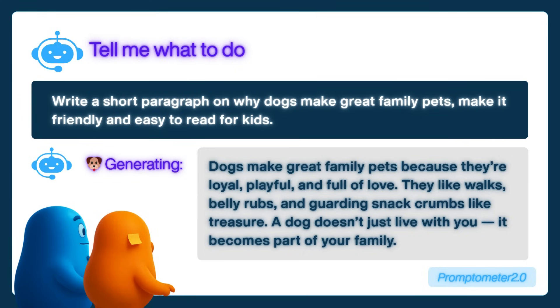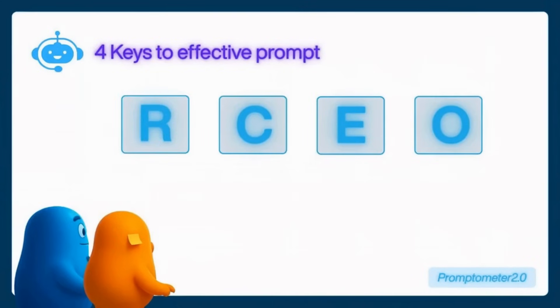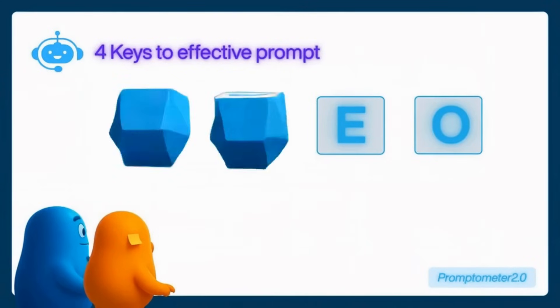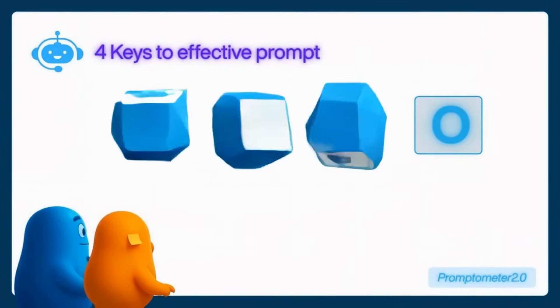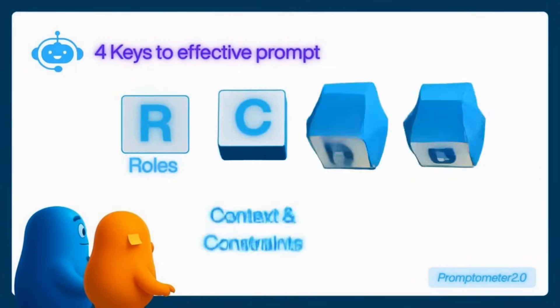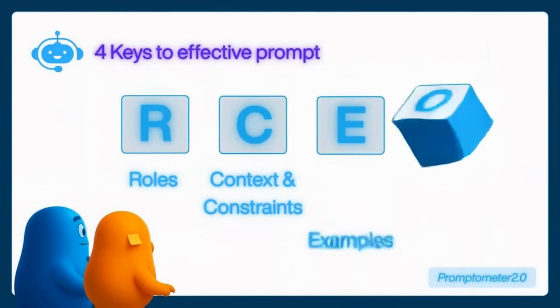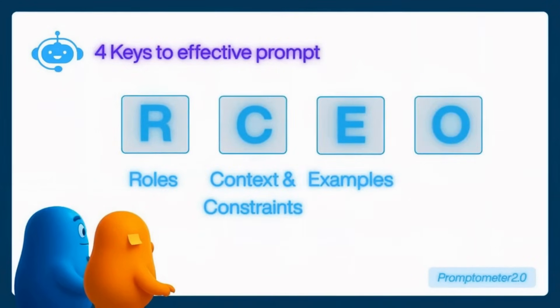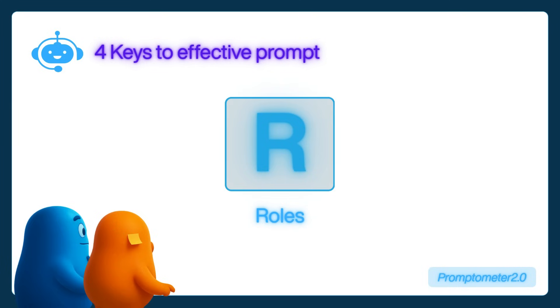Now let's talk about the four keys to effective prompting: the RCEO framework. It stands for role, context and constraints, examples, and output. Let's break that down together.